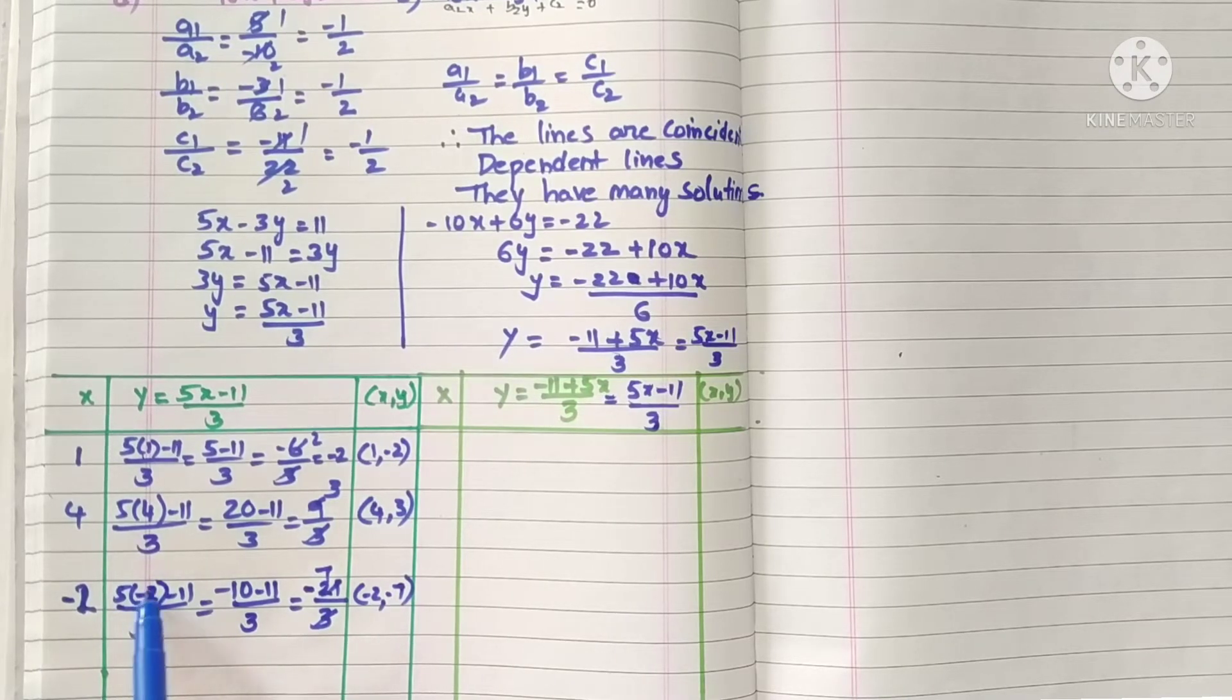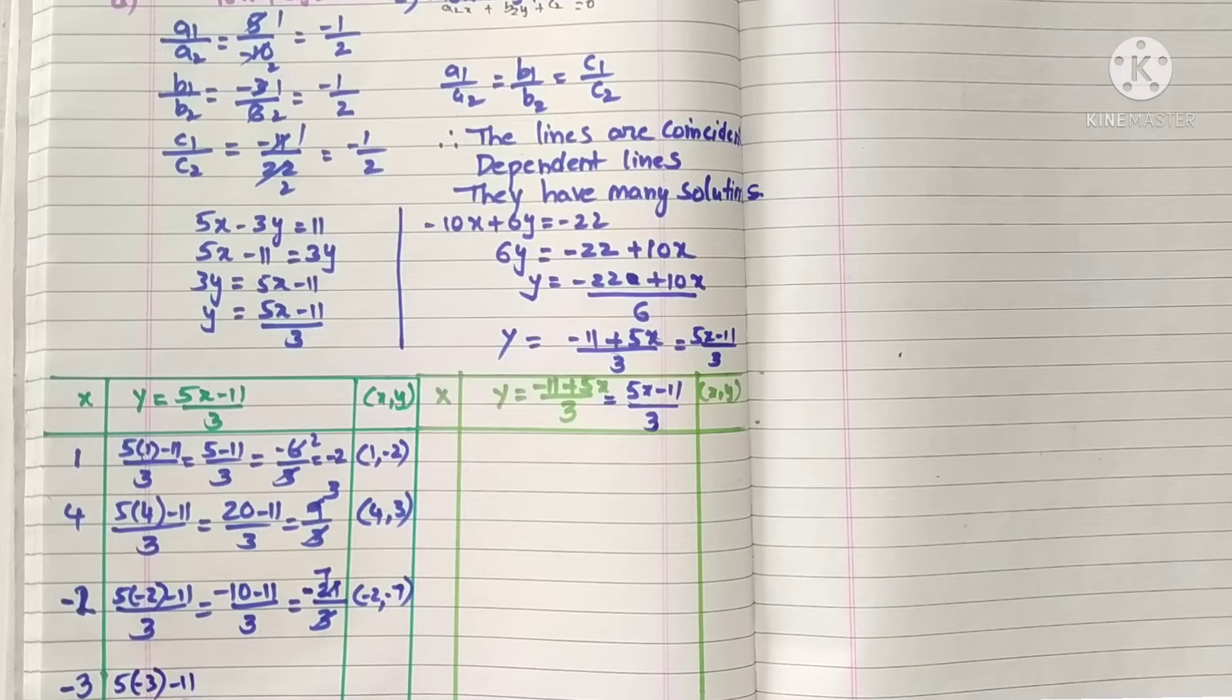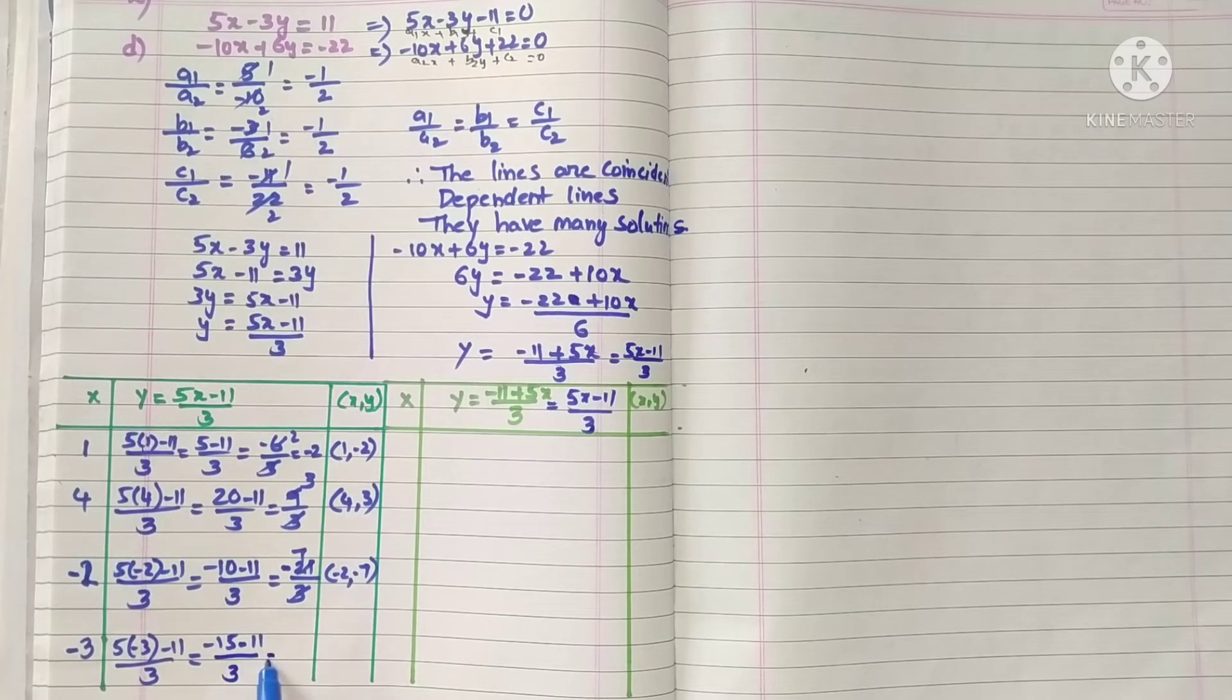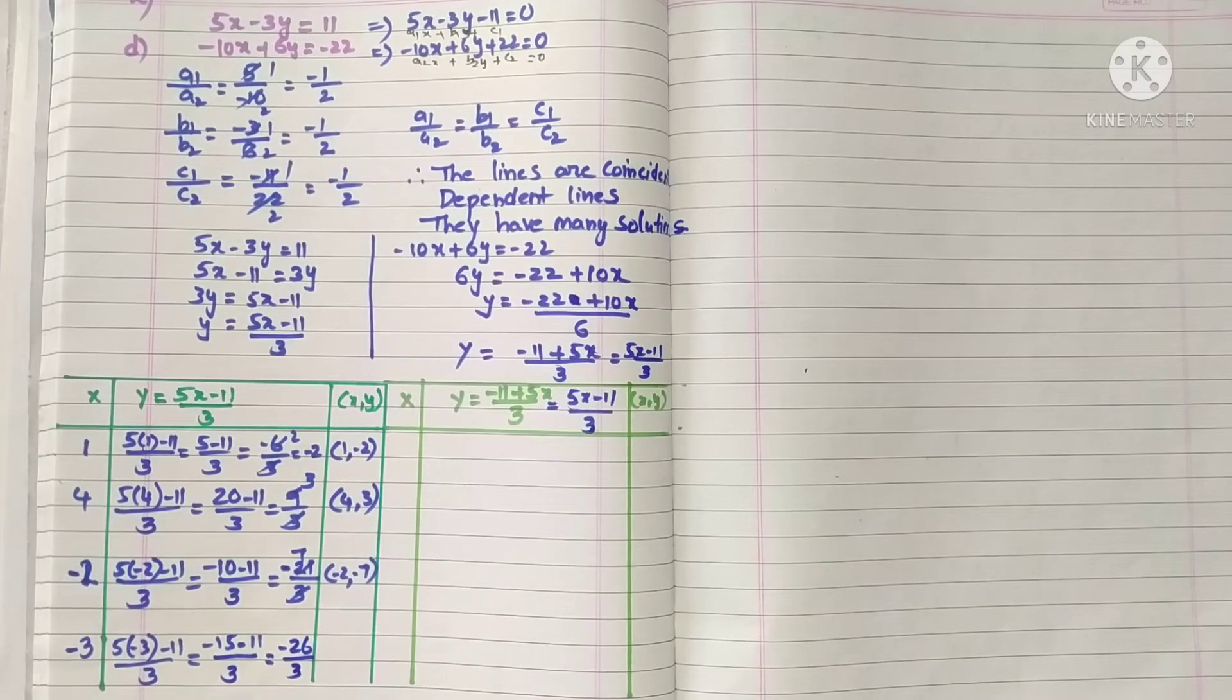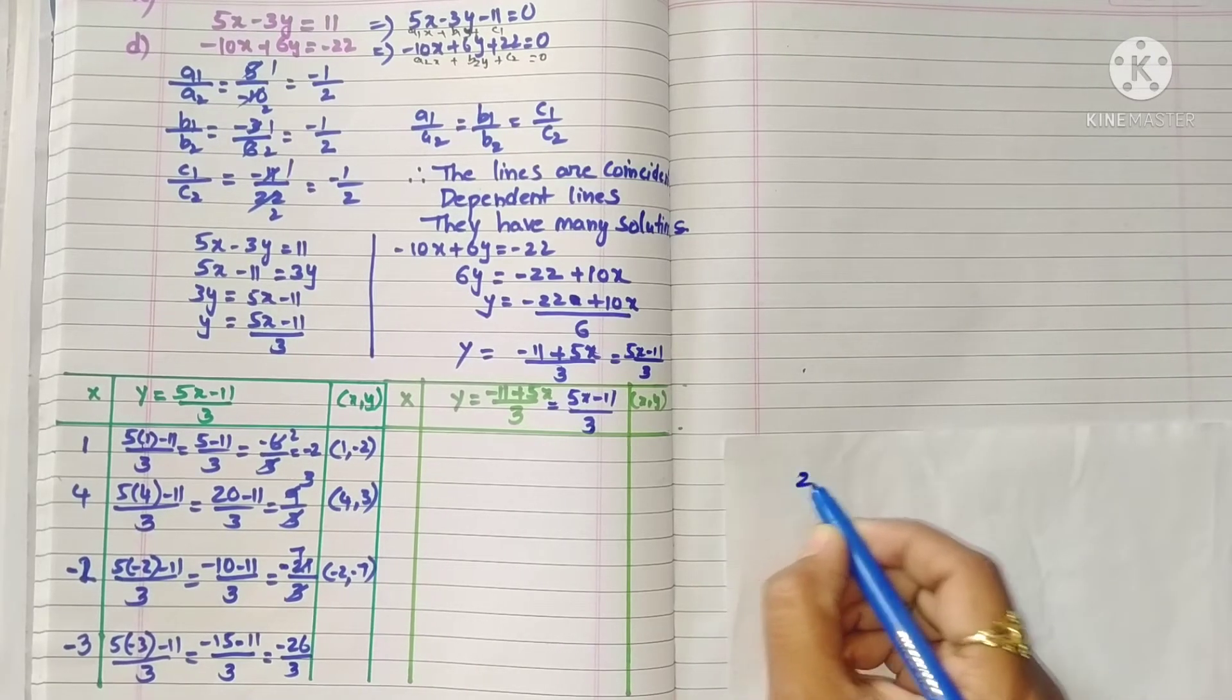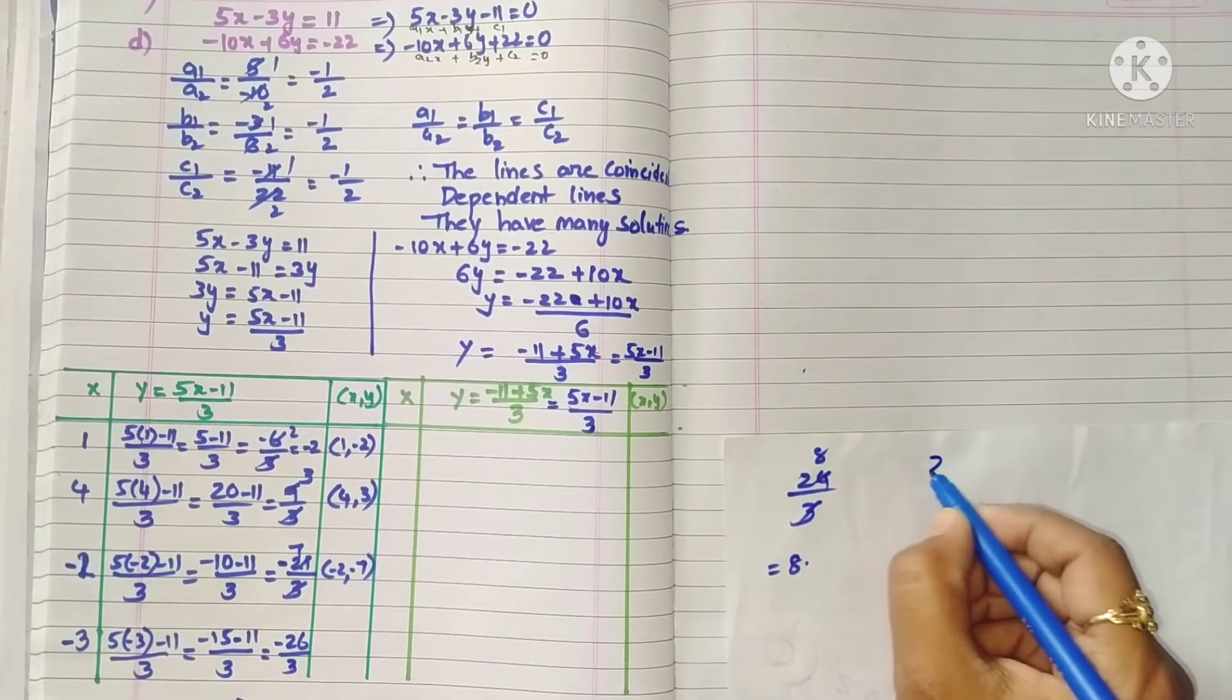We will take minus 3. 5 into minus 3 minus 11 by 3 equals minus 15 minus 11 by 3, which is minus 26 by 3.